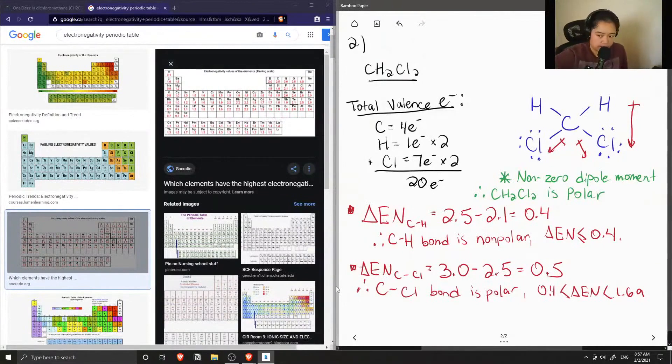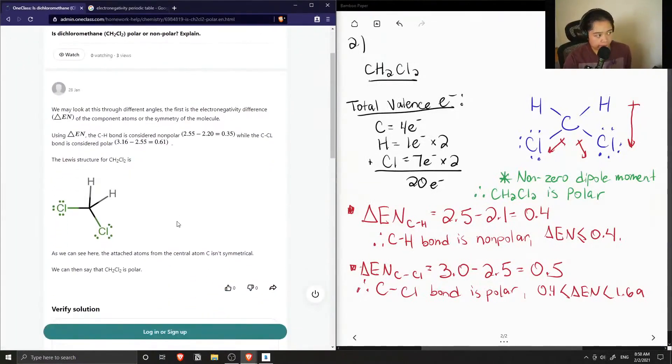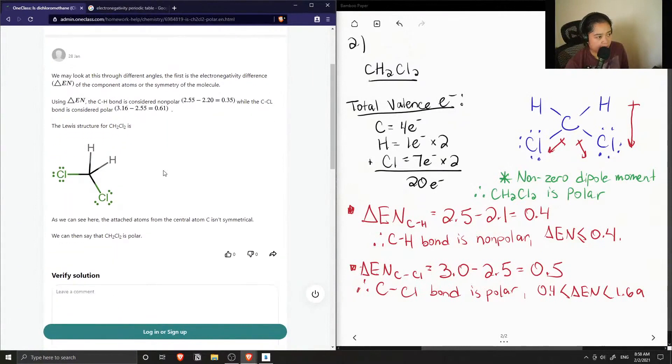Okay, so now let's see what the junior tutor said. We may look at this through different bond angles. The first is the electronegativity difference of the component atoms or the symmetry of the molecule.